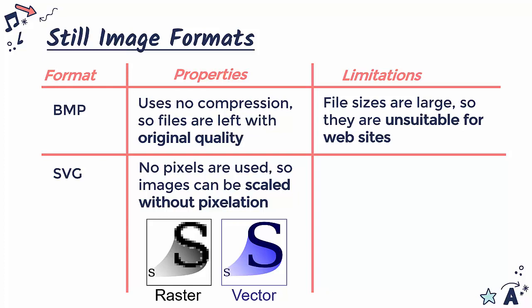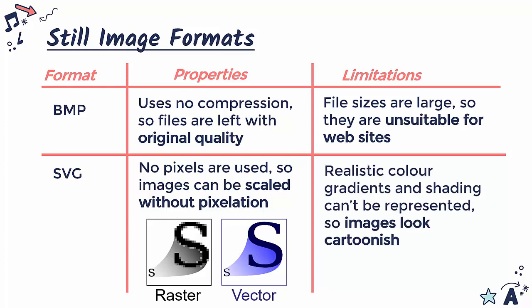However, just because of the way SVG images are stored using maths as opposed to little blocks of colour, it's very difficult to store realistic looking colour gradients and shading. Often images stored as SVG files look quite cartoonish, using quite artificial colours and artificial gradients. You can't really represent a photo using SVG - it's really only for cartoon graphics. In terms of file sizes though, SVG images tend to be very small because we don't have to store loads of different pixels, just the properties of the image.